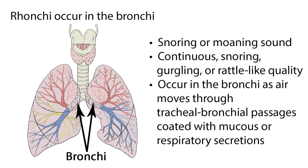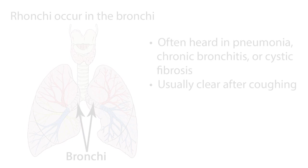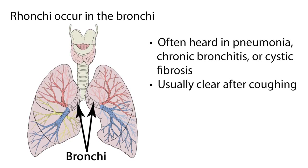A wheeze may also be lower-pitched, having a snoring or moaning quality, in which case they are referred to as ronchi. Ronchi sounds have a continuous snoring, gurgling, or rattle-like quality. Ronchi occur in the bronchi as air moves through tracheal-bronchial passages coated with mucus or respiratory secretions. This is often heard in pneumonia, chronic bronchitis, or cystic fibrosis. Ronchi usually clear after coughing.